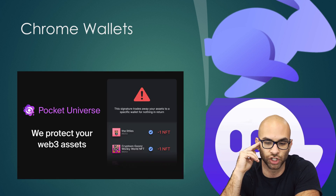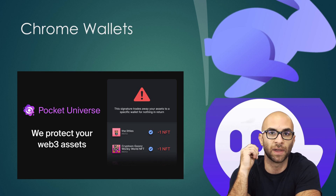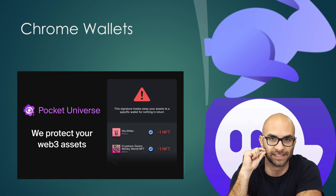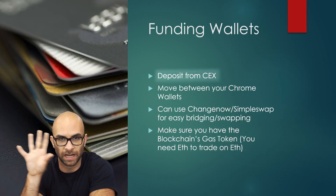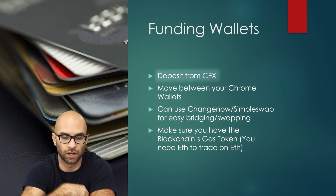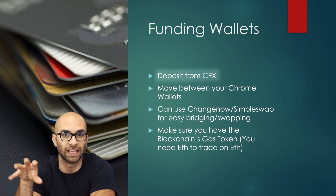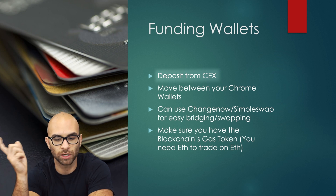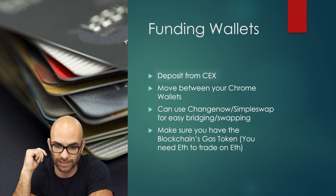There's also another Chrome extension you can download called Pocket Universe. I recommend this for beginners because it gives you different warning signs if it believes something is some sort of scam. Once you have your wallet set up, you're going to be able to have money that you deposited from a centralized exchange and withdraw it to these different Chrome wallets.